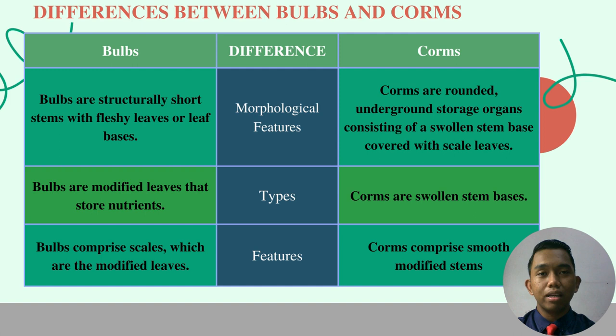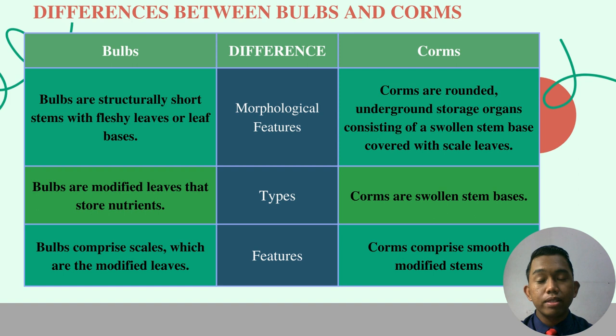Now we will see the differences between bulbs and corms. There are 11 differences listed, but we will explain just three of them. First, morphological features: bulbs are structurally short stems with fleshy leaves or leaf bases, while corms are rounded underground storage organs consisting of a swollen stem base covered with scale leaves. Second, the types: bulbs are modified leaves that store nutrients, while corms are swollen stem bases. Third, features: bulbs comprise scales which are modified leaves, while corms comprise a smooth modified stem.